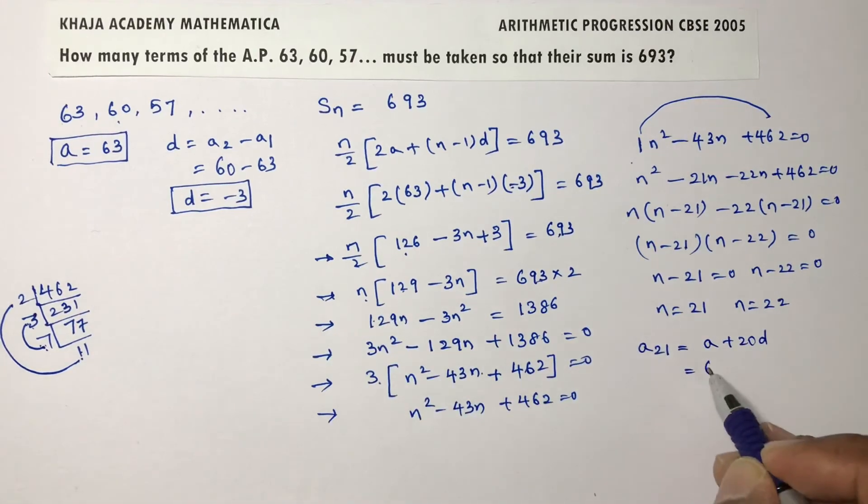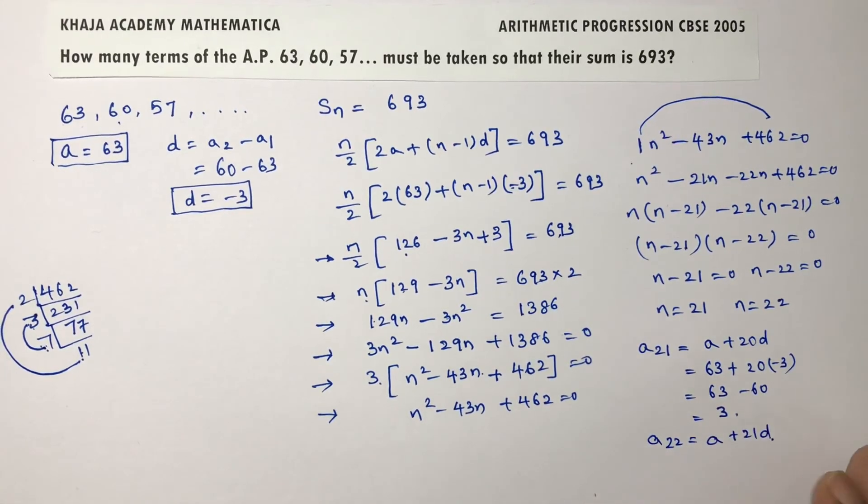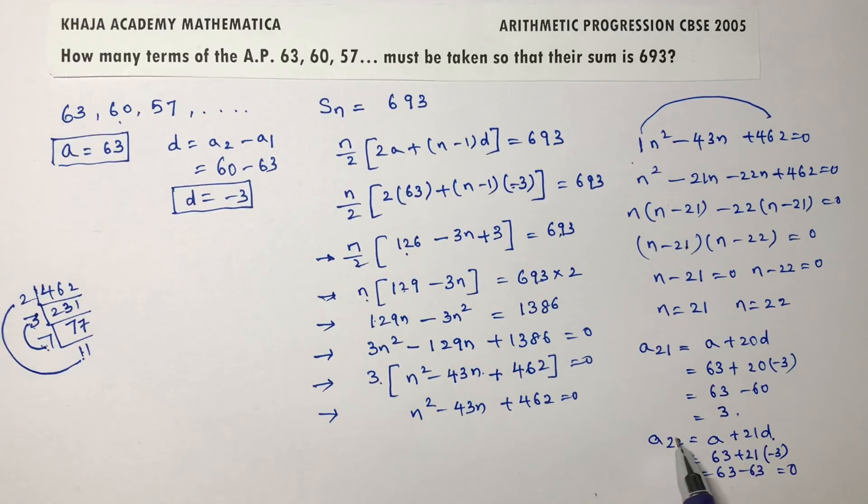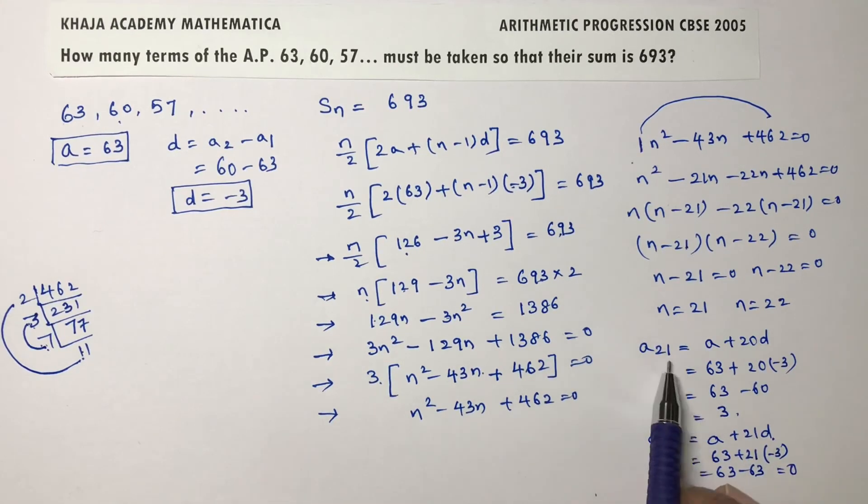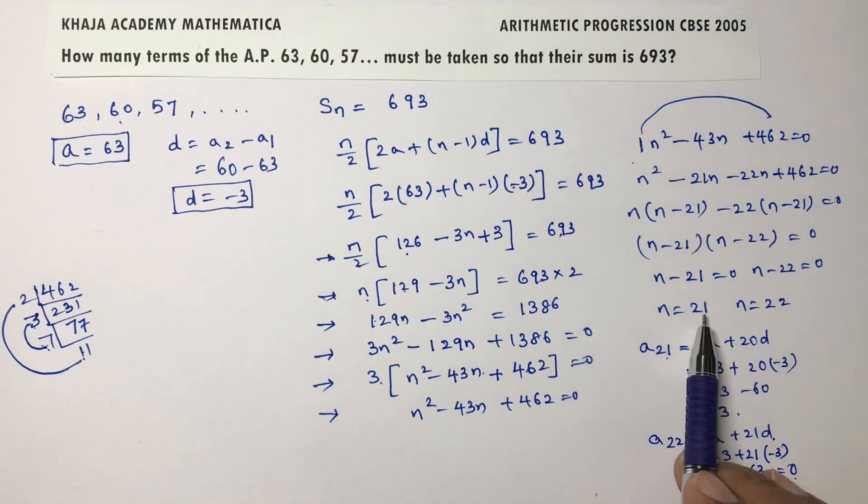If you find a21, which is a plus 20d, a is 63 plus 20 into d is minus 3, so 63 minus 60, which is 3. Now find a22, a plus 21d, which is 63 plus 21 into minus 3, 63 minus 63 which is 0. If you observe, the 22nd term is 0. So if you add 21 terms you get 693, and if you add 22 terms you also get 693. So number of terms is either 21 or 22.